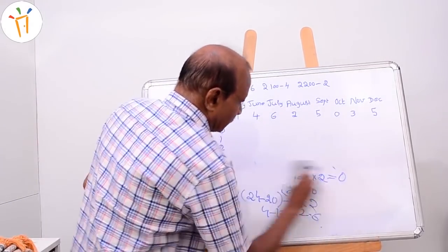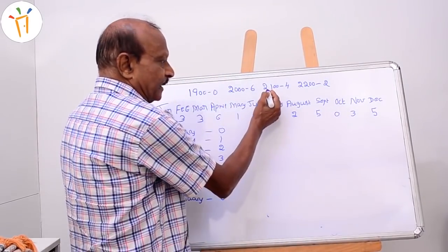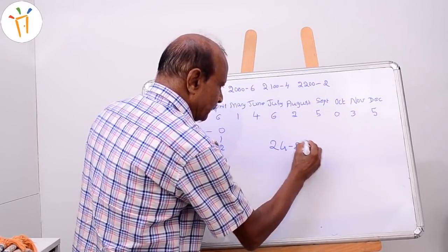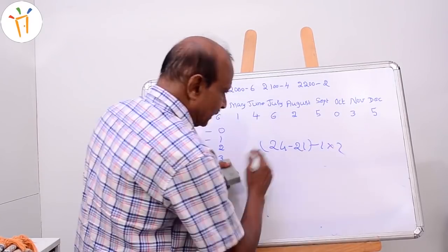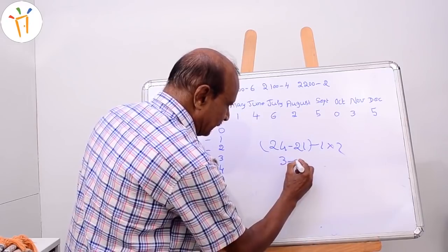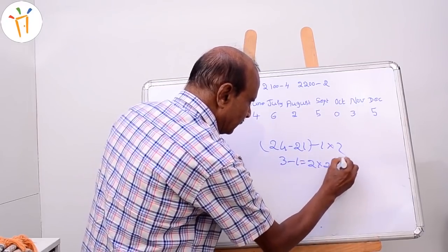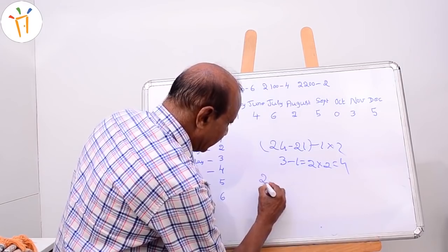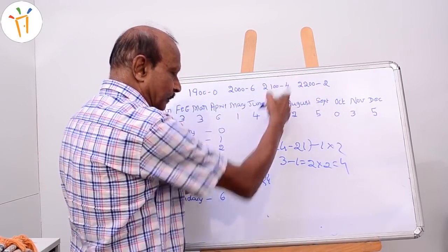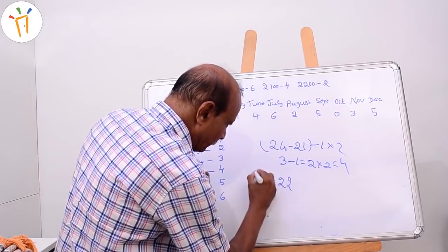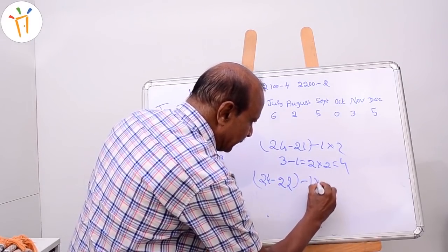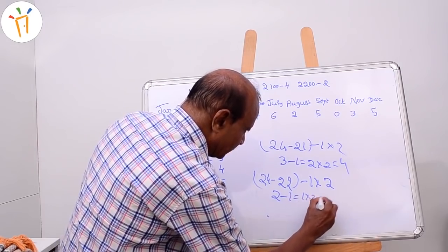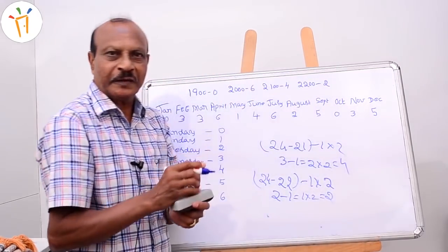For 2200, the century is 22. The next number divisible by 4 is 24. Formula: 24 minus 22 equals 2, minus 1 equals 1, times 2 equals 2. So the code number for 2200 is 2. Now you have understood how I have derived the century code numbers.